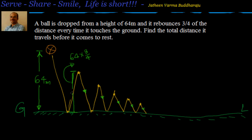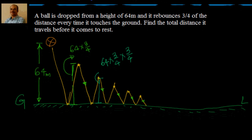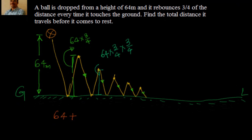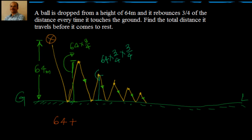Once it touches the ground again it rebounds, and it rebounds to 3/4 of whatever distance it travelled earlier — so that's 64 × (3/4) × (3/4). That continues till the ball comes to rest. In numbers: the ball first falls 64, then rebounds 3/4 × 64, then comes back down 3/4 × 64.